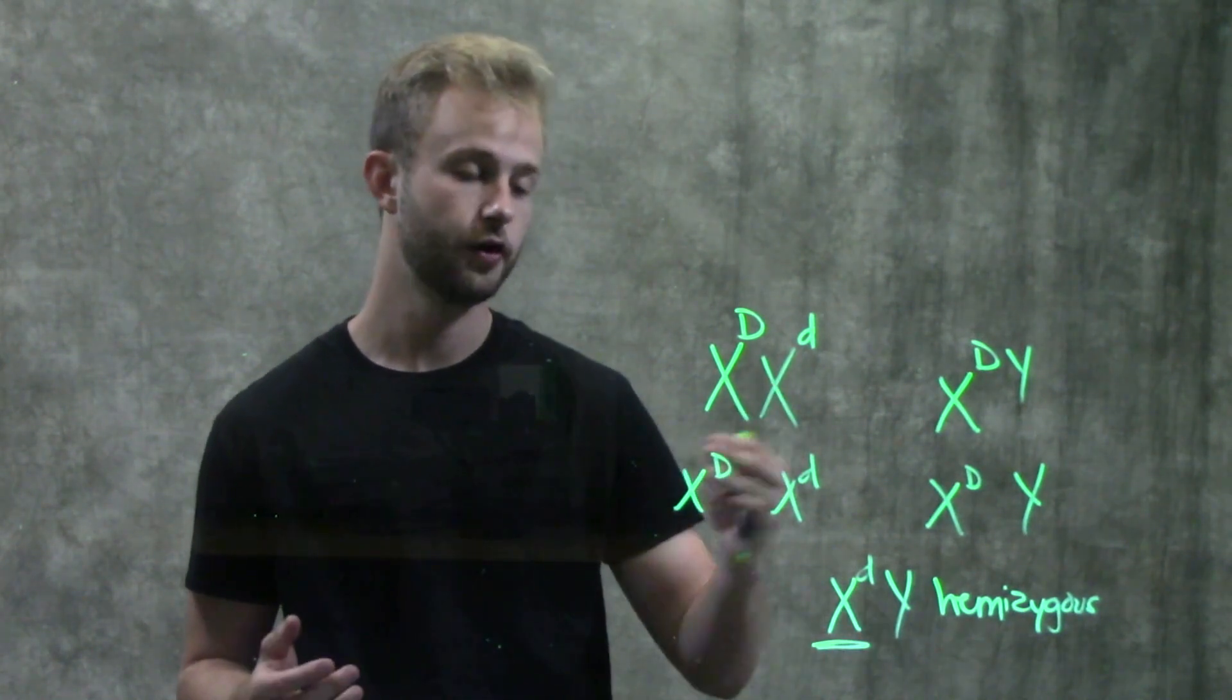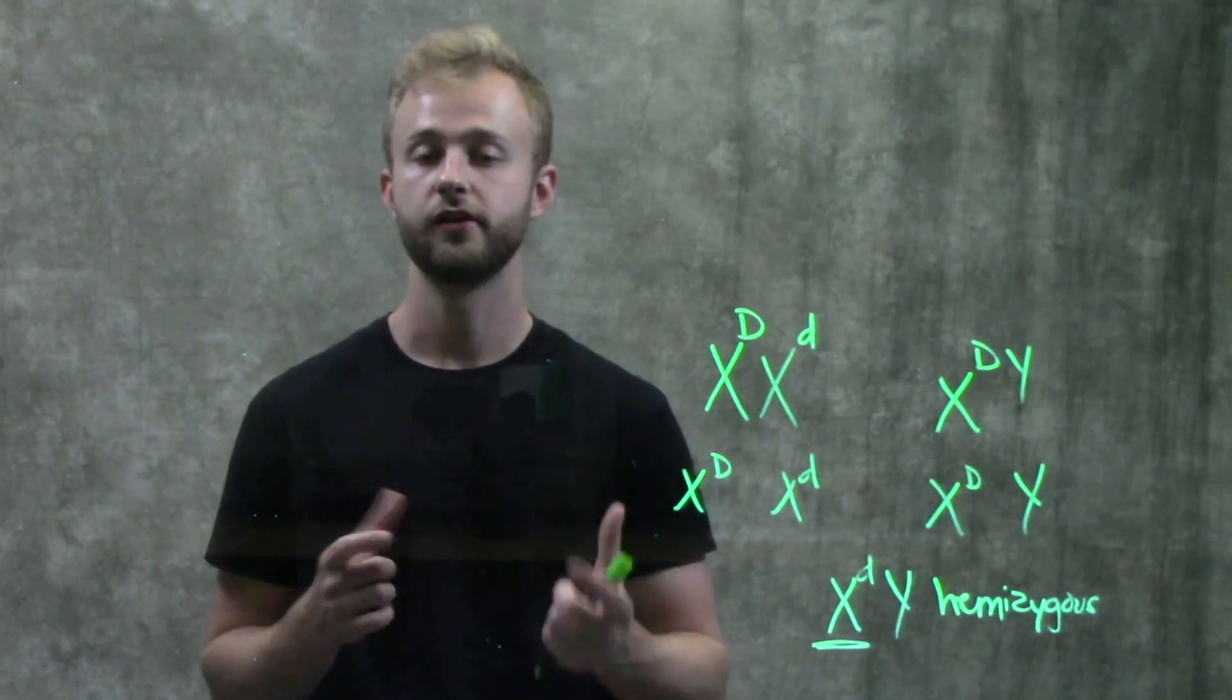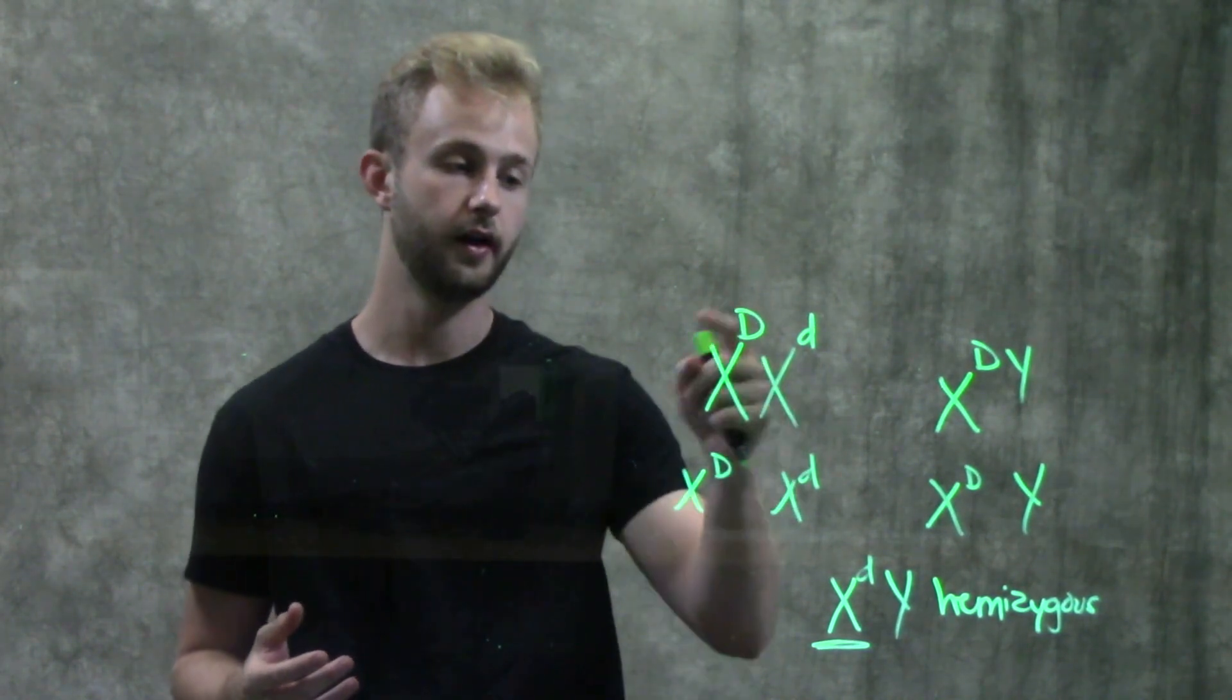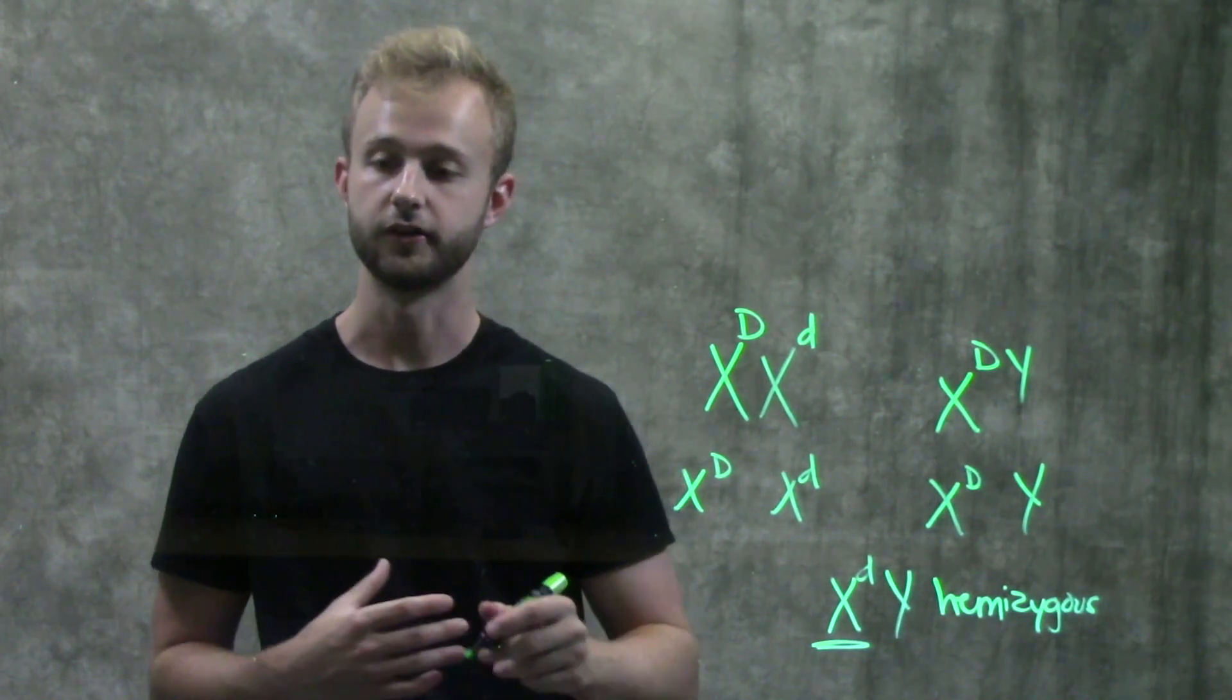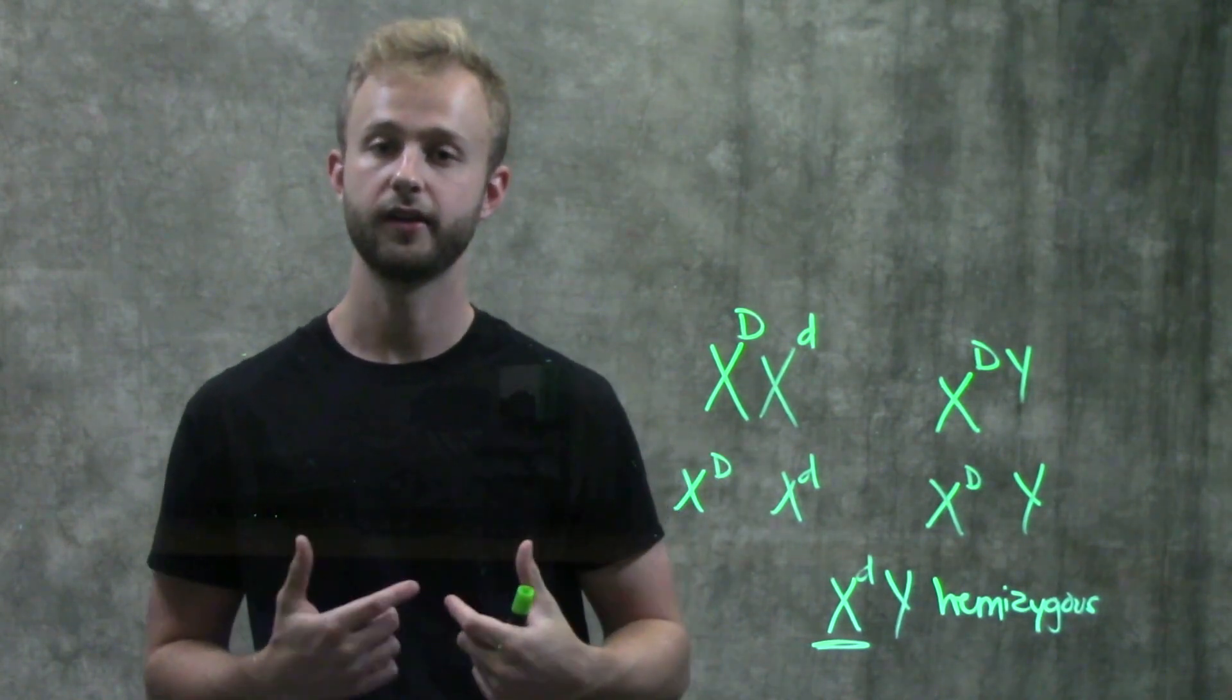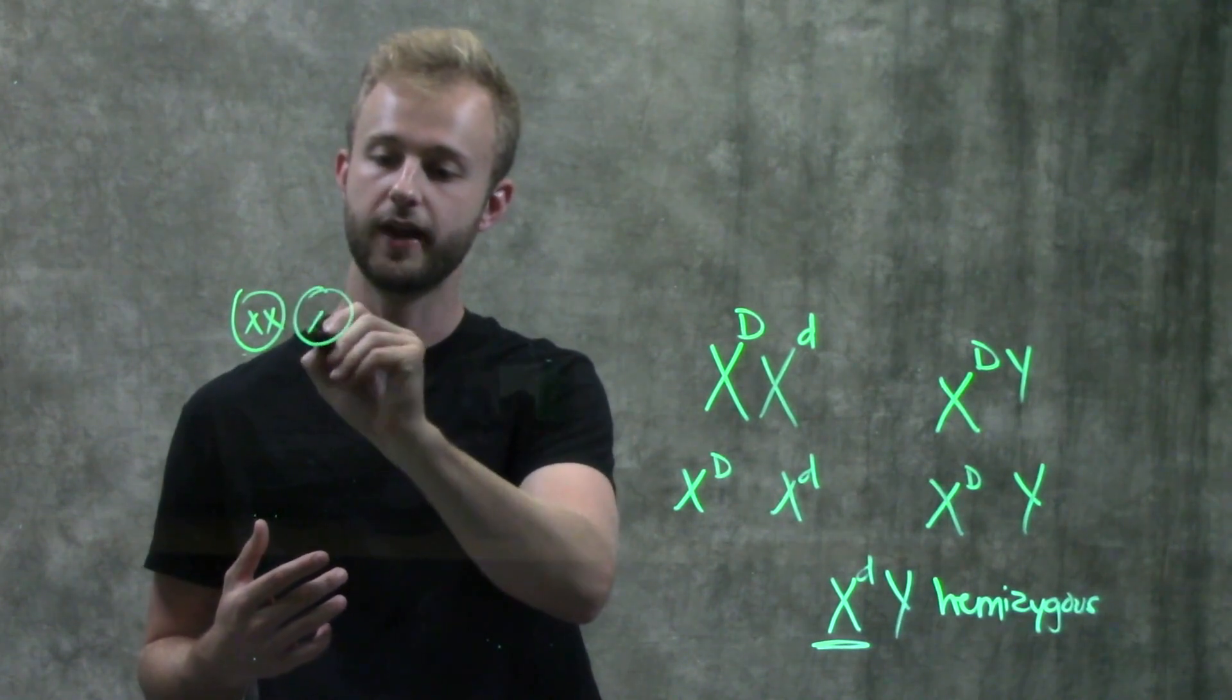So now that we kind of know how genes on our X chromosome are inherited, we can look at another really interesting thing that X chromosomes do specifically in women called X inactivation. So we know that women have two X chromosomes in all of their cells. So after fertilization has occurred, if it is going to be a girl early on in embryonic development, we have all the cells having two X chromosomes.